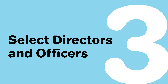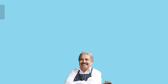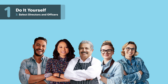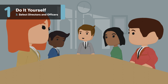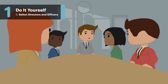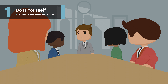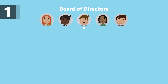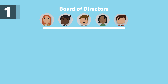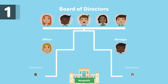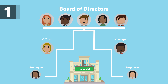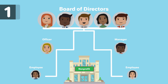Step three: select directors and officers. Your nonprofit corporation will be made up of some number of directors and officers. The directors of a nonprofit are responsible for overseeing the operations of the organization. Together, they form the board of directors. The power and influence of the directors over the organization comes from them as a board — the directors themselves do not have any authority as individuals.